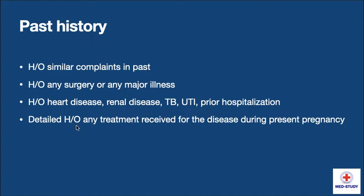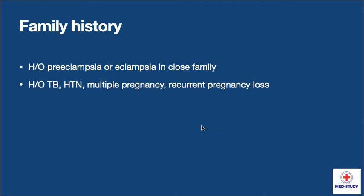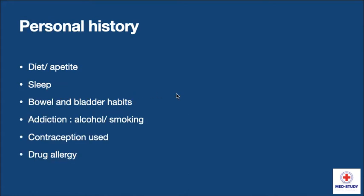We have to take detailed history of any treatment received for a disease during the present pregnancy. Now coming to family history, we have to know the history of preeclampsia or eclampsia in the close family, history of tuberculosis, hypertension, multiple pregnancy, and recurrent pregnancy loss.